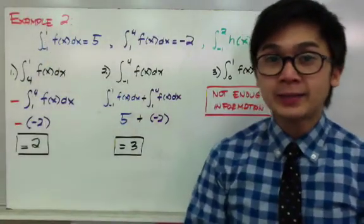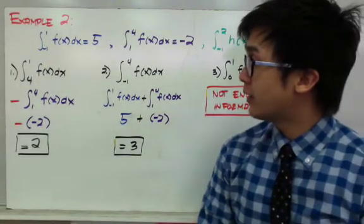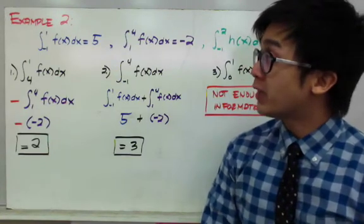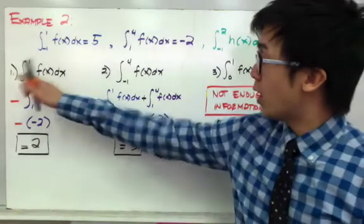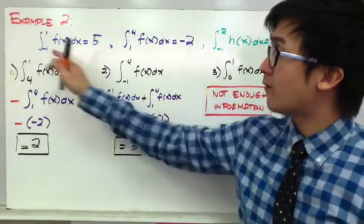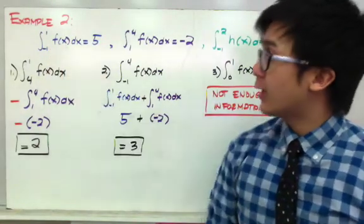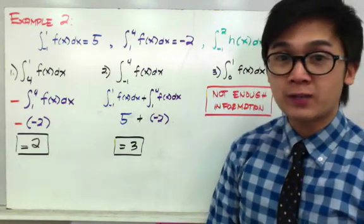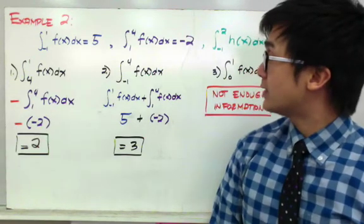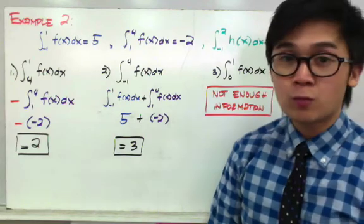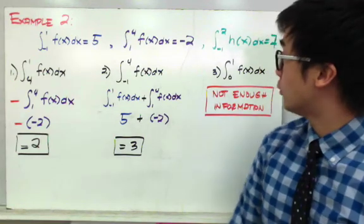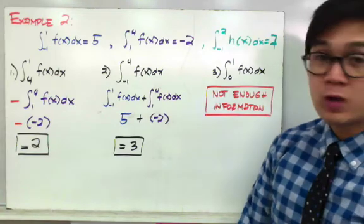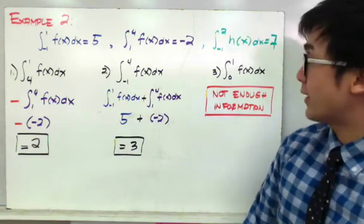For our second set of integral notations, using the properties of integrals to evaluate problems 1, 2, and 3: the first integral is f(x) dx from negative 1 to 1, which is equal to 5. The second is f(x) dx from 1 through 4, which is equal to negative 2. The third is h(x) dx from negative 1 to 2, which is equal to 7.